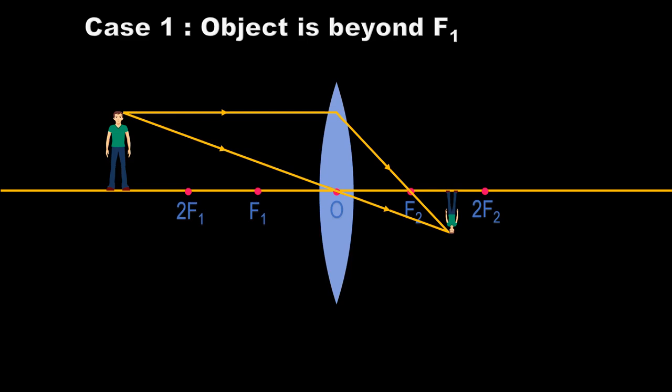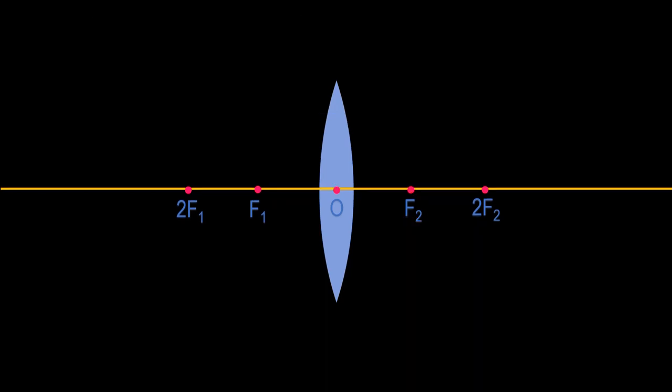Let us see the properties of the image for Case 1. We look at three aspects: nature, size, and position. The image is real and inverted, and it is diminished in size. The position of the image is between F2 and 2F2.